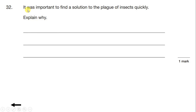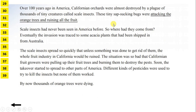Question 32: It was important to find a solution to the plague of insects quickly. Explain why. To explain why, we need to think about what the insects were doing. If we go back to the text, we already know that the insects were attacking the orange trees and ruining all the fruit. So we could write that as our answer. But just to check, let's read on and read the next paragraph to see if there are any more details.